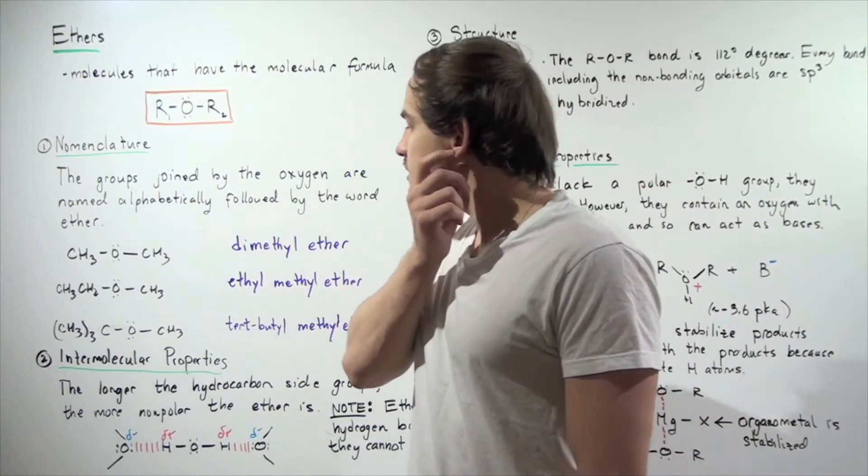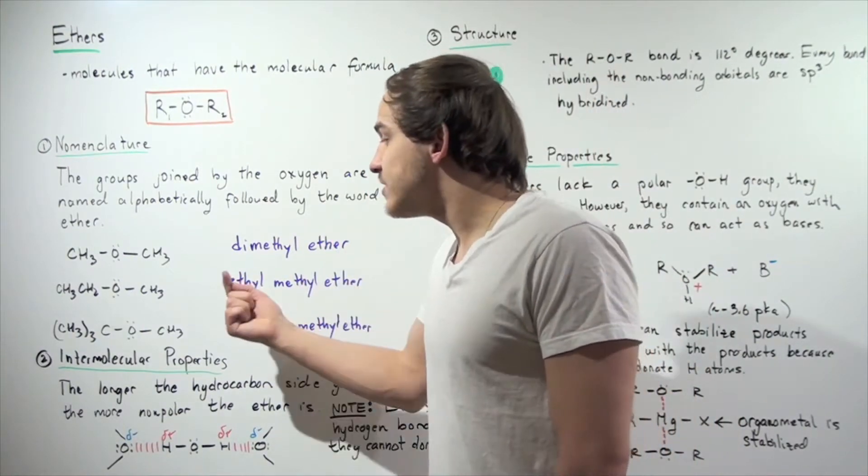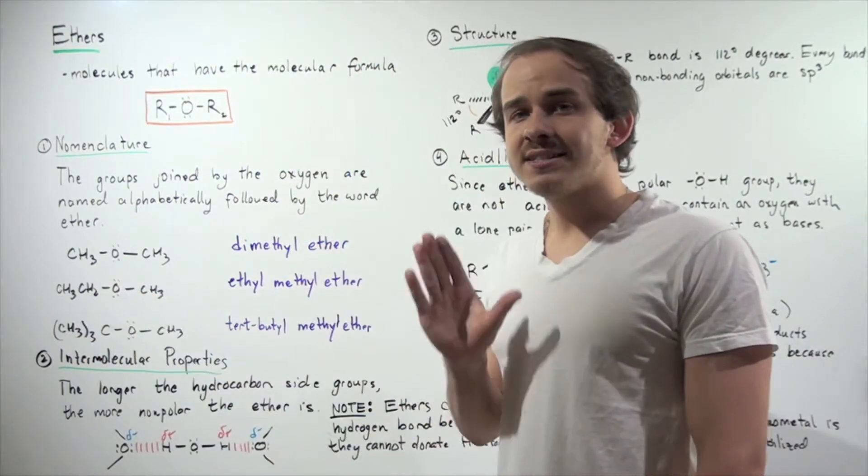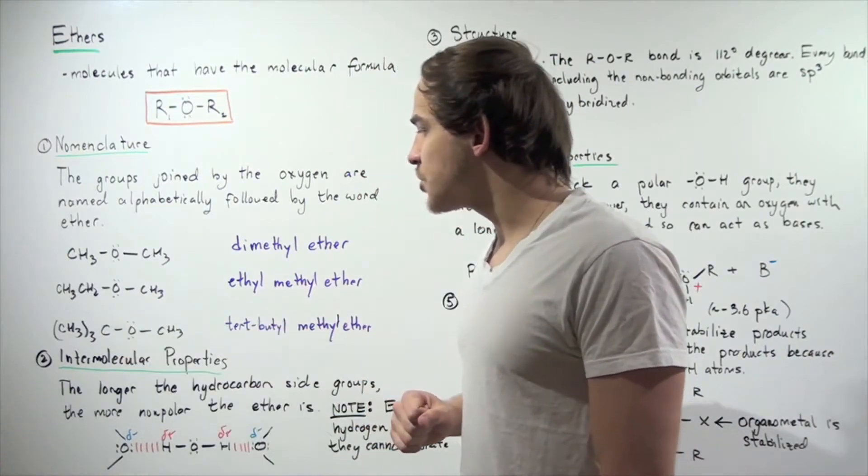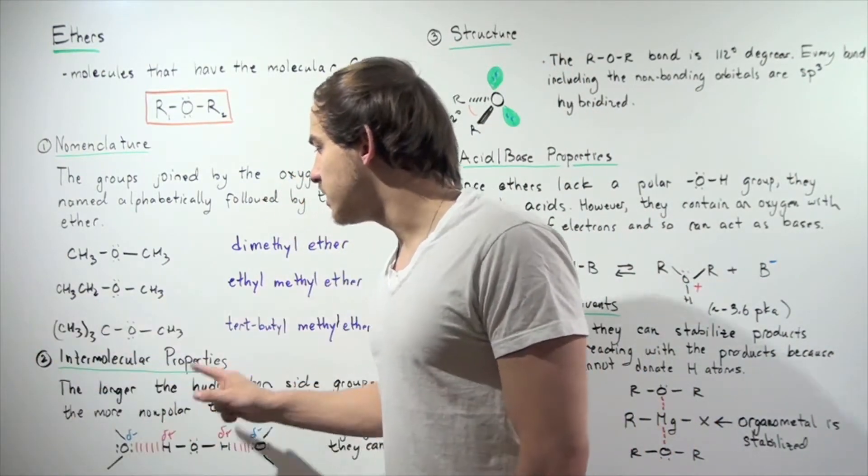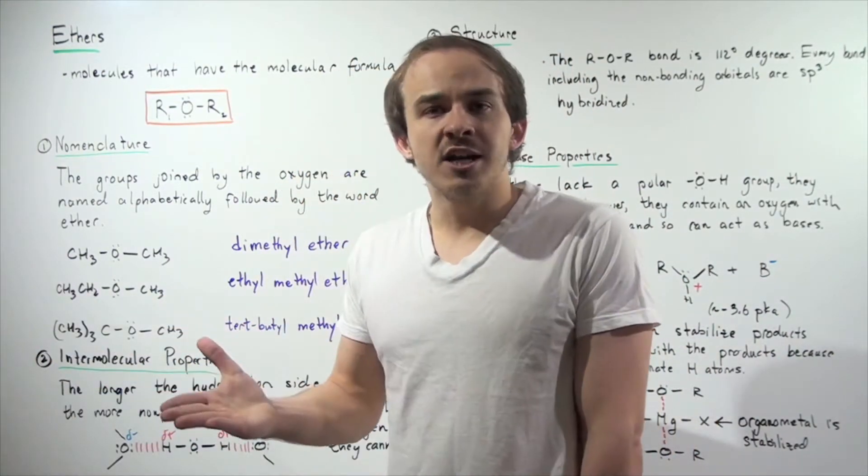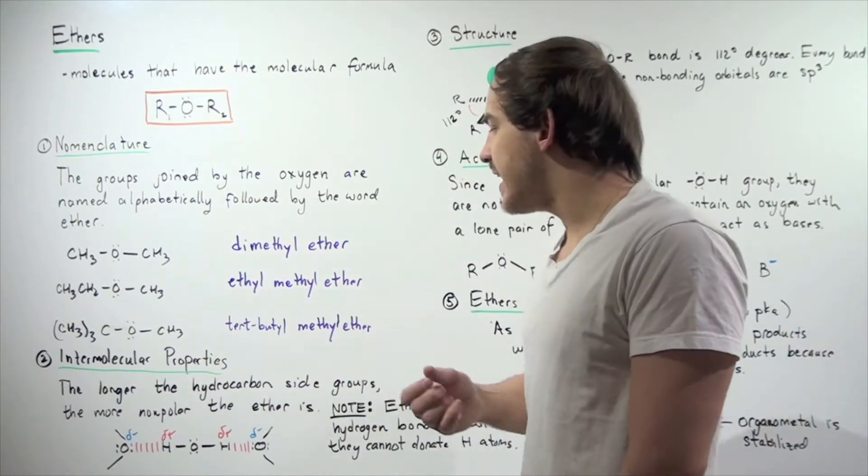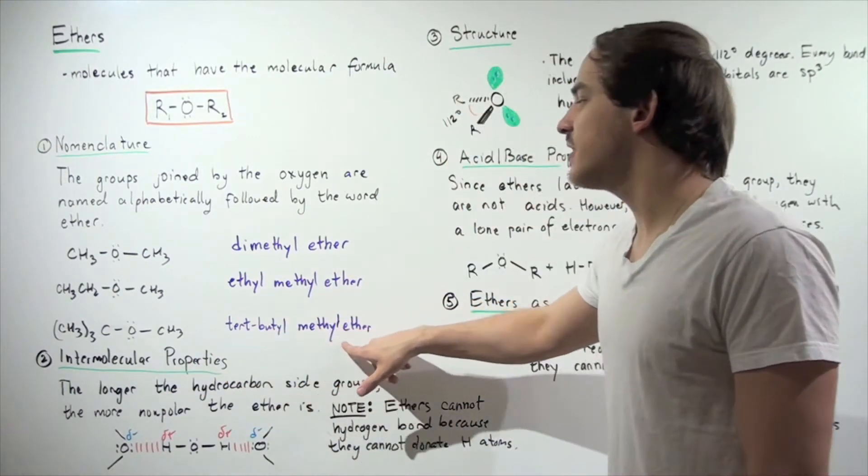Now let's look at the final compound. We have, once again, two different R groups attached to our central oxygen: tert-butyl and methyl. Since B comes before M in the alphabet, we name it tert-butyl methyl ether.